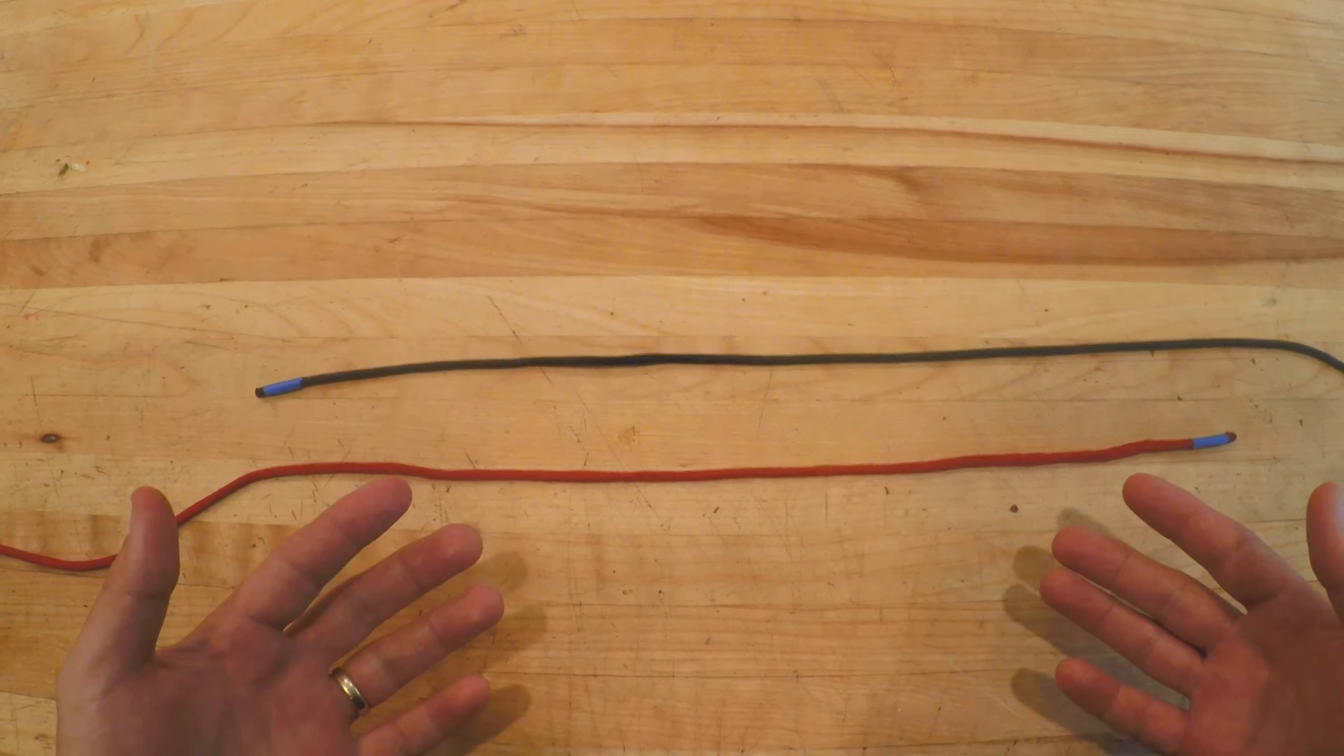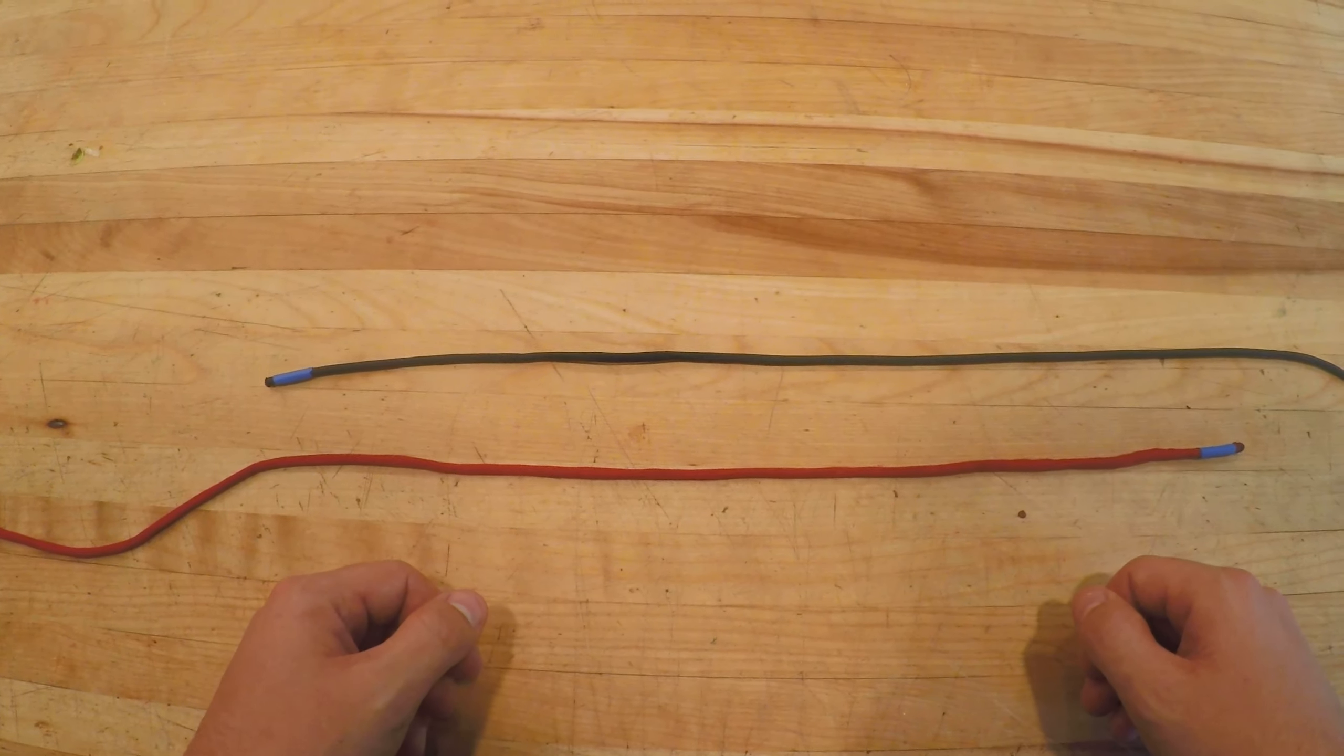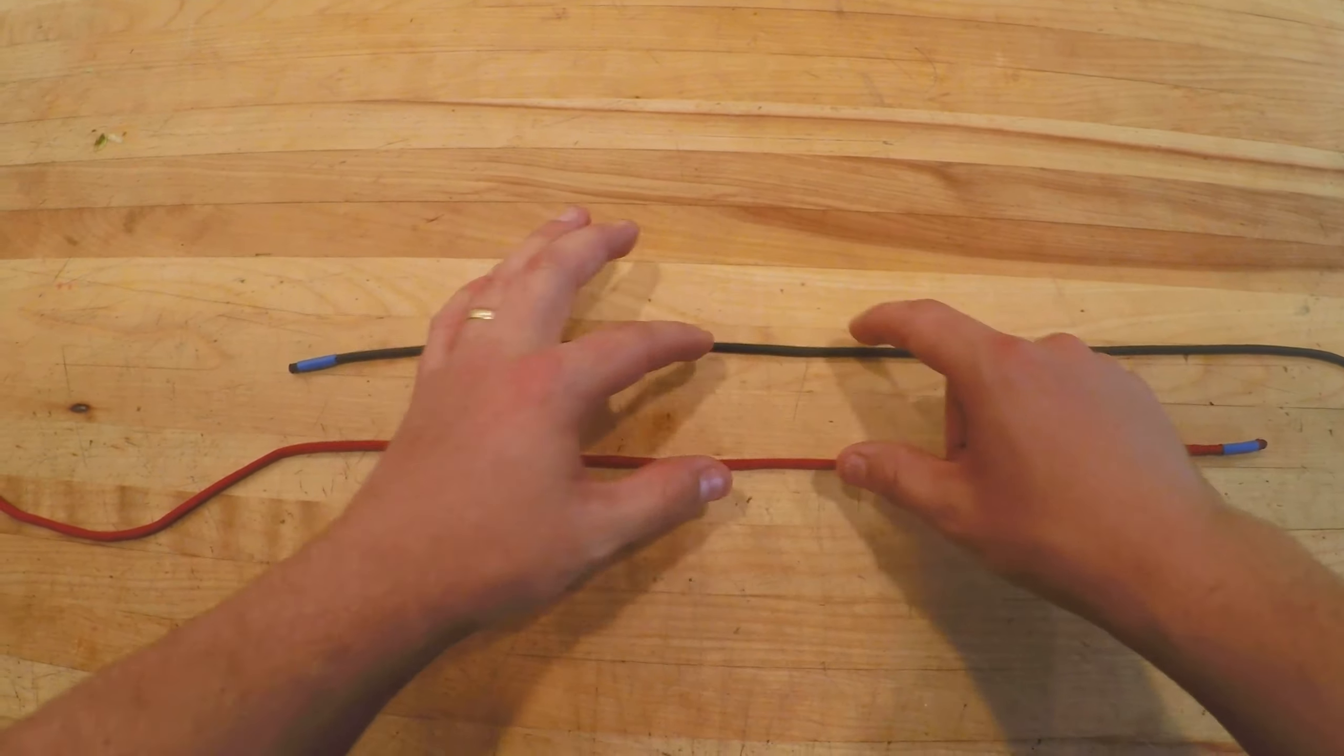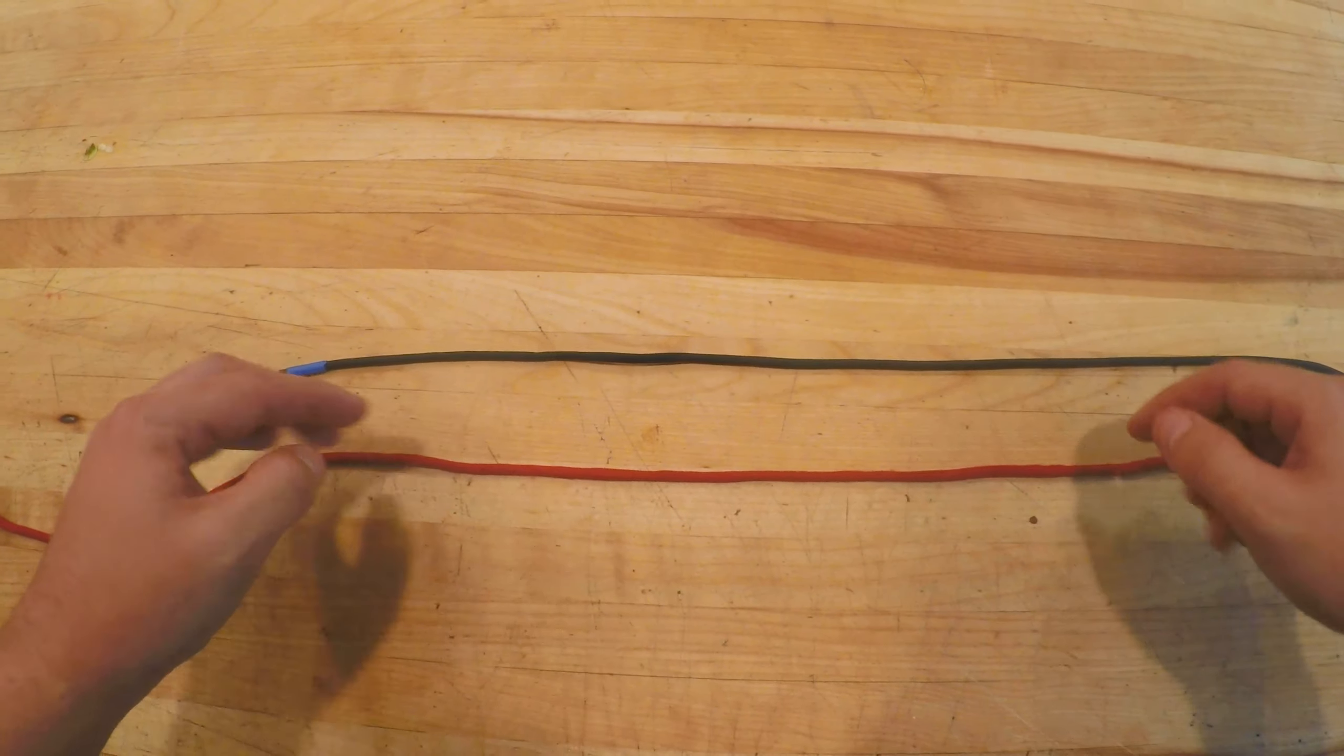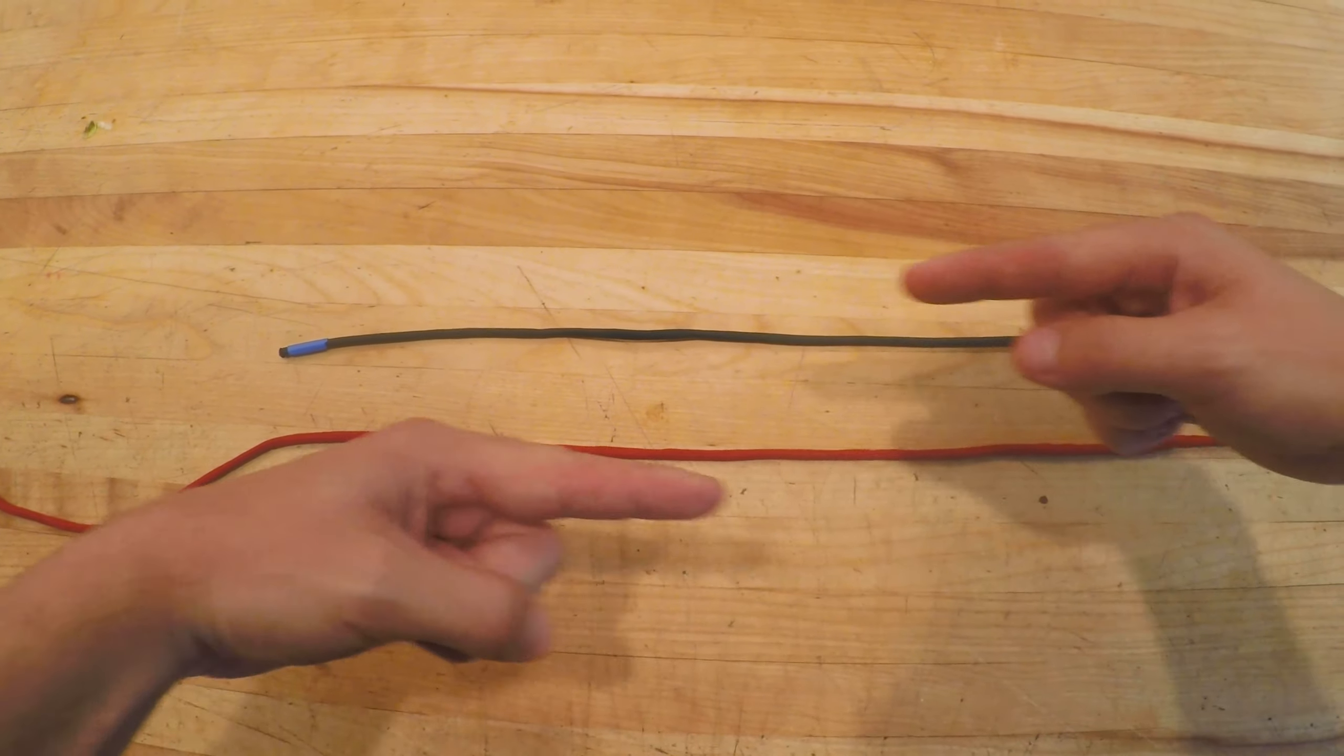In order to tie this knot successfully you're going to need two ropes of the same diameter or the same size. Next you're going to want to lay them parallel to each other with your working ends traveling away from each other, so they should be laying in opposite directions.